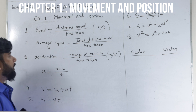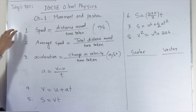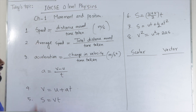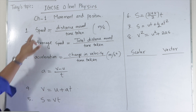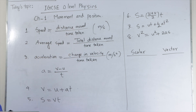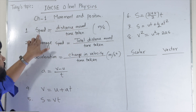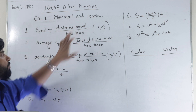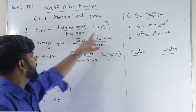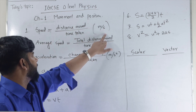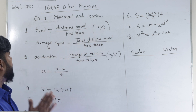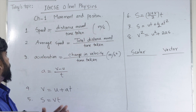In this chapter, first we have to learn about the relation between speed, distance, and time taken. Speed equals distance moved divided by time taken. The unit is meters per second. Remember, speed is a scalar quantity.